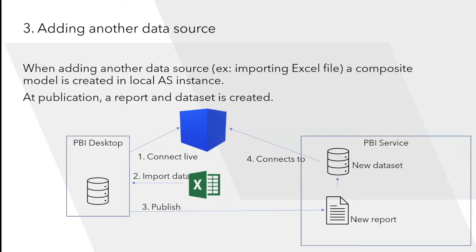Going further, you can also import data from Excel, mesh it with the connected model, and publish. What you get is a dataset that: (a) has the metadata of the enterprise semantic model, (b) points to it via live connection, but (c) also contains all imported Excel data. You get a hybrid composite scenario — live-connected sources with no local data copy alongside imported data that lives in the dataset, plus all your relationships, measures, and customizations.